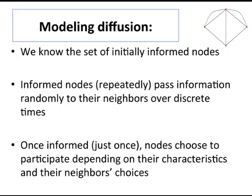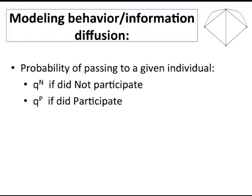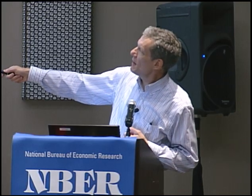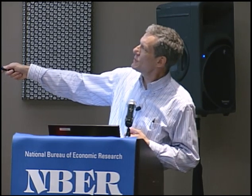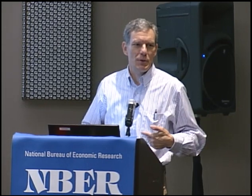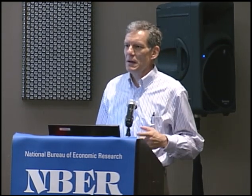Now we want to dissect this: how much is information and how much is something else? We import the diffusion model into this setting and layer it with the decision, doing the regression conditional on people's information — separating whether people are informed, then conditional on being informed, how much do their neighbors matter? One reason I could be seeing this strong effect is that I'm just much more likely to know about the product if a lot of my friends are using it.